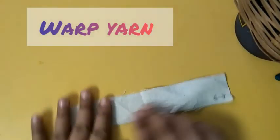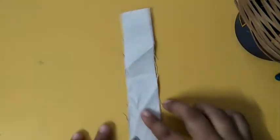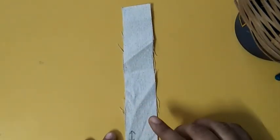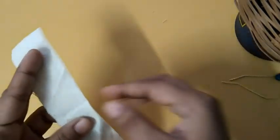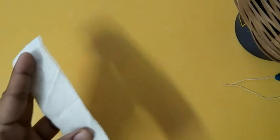We will take warp yarn first. So take out your warp strip, remove a few threads to straighten up so as to get a thread end.